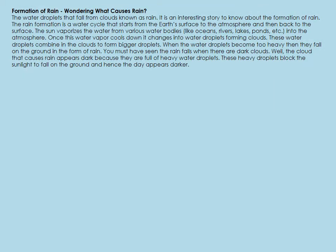Have you ever wondered what causes the rain? The water droplets that fall from clouds are known as rain. It is an interesting story to know about the formation of rain. The rain formation is a water cycle that starts from the earth's surface to the atmosphere and then back to the surface. Let's have a look.